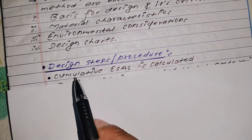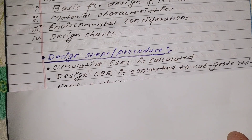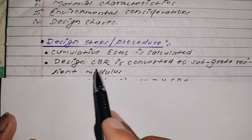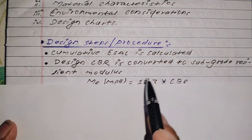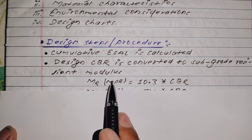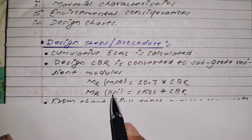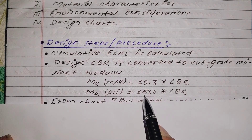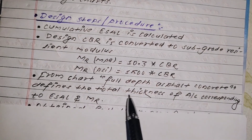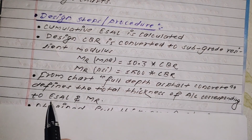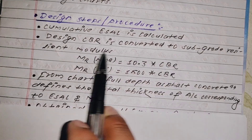First of all, a cumulative equivalent single axle load is calculated using the design traffic formula. Then, further design - the CBR is converted to subgrade resilient modulus. The subgrade CBR percent given in the question is converted to resilient modulus. Third point: from the chart, full depth asphalt concrete defines the total thickness of asphalt concrete corresponding to the equivalent single axle load.